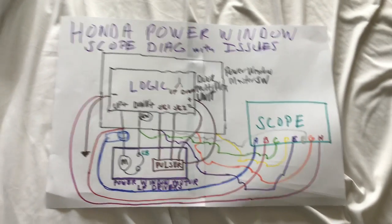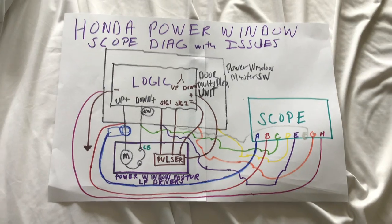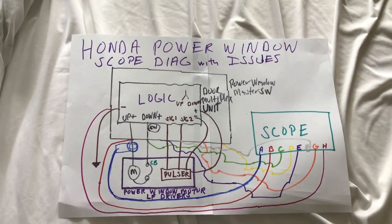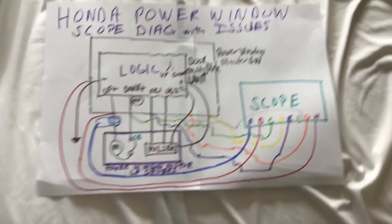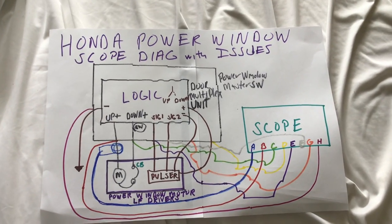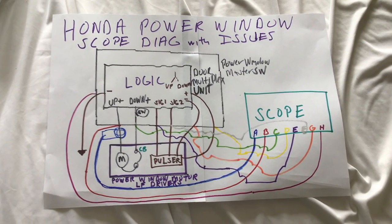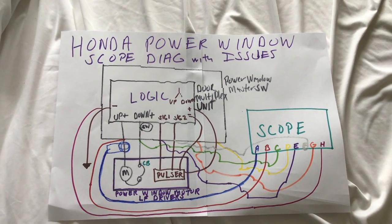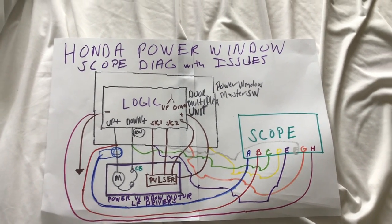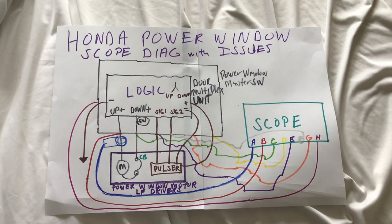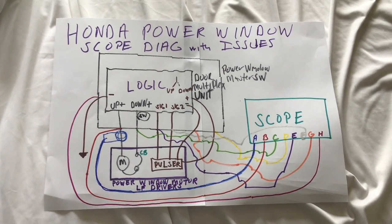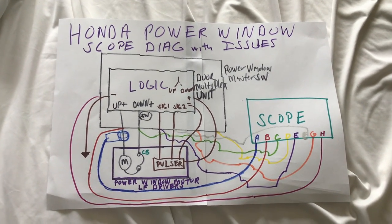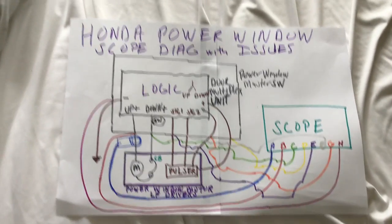We have an eight-channel setup here. It looks like a lot, but just take it one channel at a time, and keep a copy of the schematic handy because it's going to help when we look at the scope patterns. Channel A is the current clamp — I'm going to current clamp the motor. We will see current flowing in both directions depending on whether the window is moving up or down. Anytime the window is moving down the current will be positive; anytime it's moving up the current will be negative — that's just how I positioned the clamp.